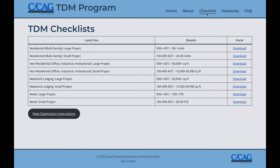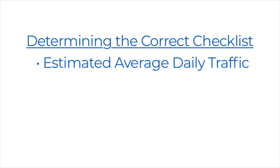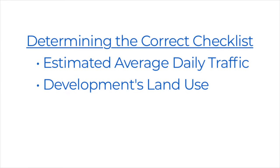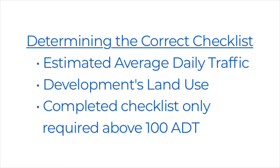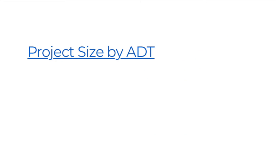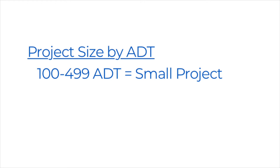To download a TDM checklist in PDF format, visit the Checklist page of ccagtdm.org. At the top of the page, there are eight checklists organized by land use and category in the left-hand column and project size in terms of estimated ADT or average daily trips and correlated square footage, employee count, or units in the right-hand column. Before we can fill out a TDM checklist, we need to determine the correct checklist to download. You'll need to know the estimated average daily traffic or ADT generated by the development and the development's land use. The minimum ADT threshold requiring completion of a CCAG TDM checklist is 100 ADT. If your project is estimated to generate 100 to 499 ADT, then it is classified as a small project. If it is estimated to generate 500 or more ADT, then it is considered a large project.